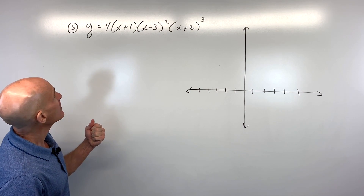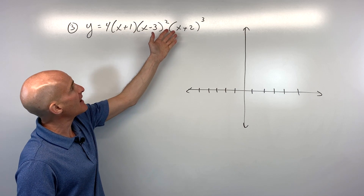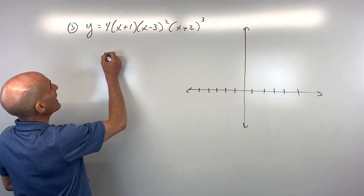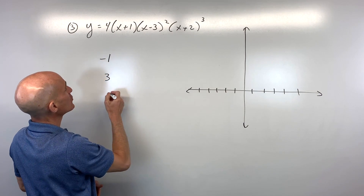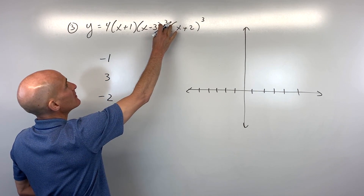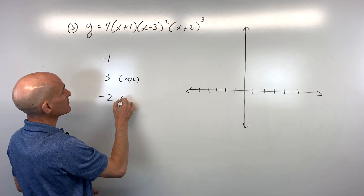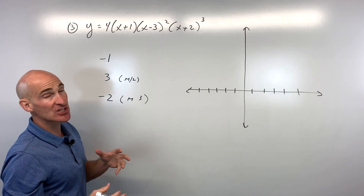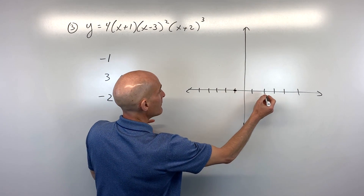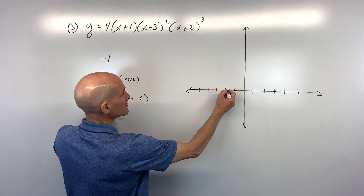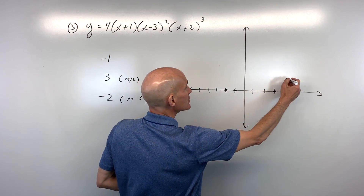Example 3 is already nicely factored. Setting each factor equal to zero: x plus 1 equals 0 gives x equals negative 1; x minus 3 equals 0 gives x equals 3; and the last factor gives x equals negative 2 with a multiplicity of 2. The middle factor has multiplicity 3. So our x-intercepts are negative 1, positive 3, and negative 2.